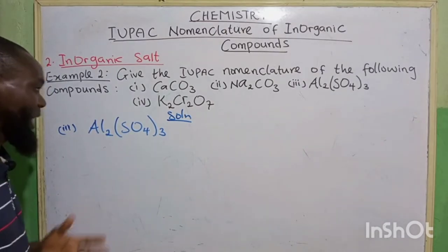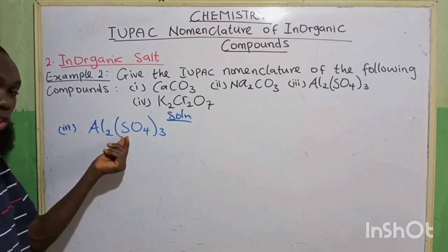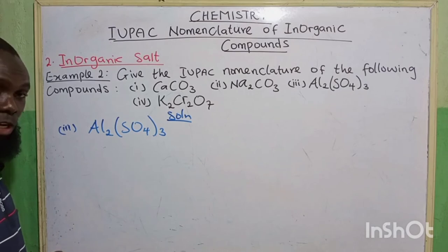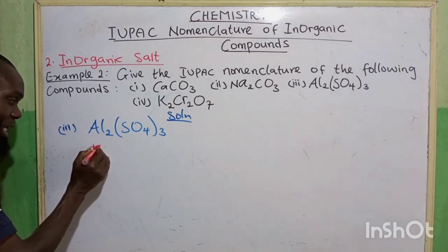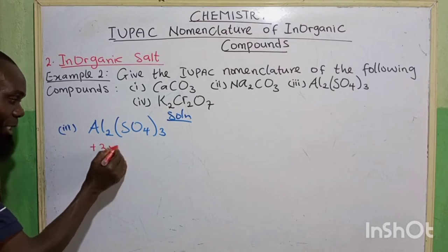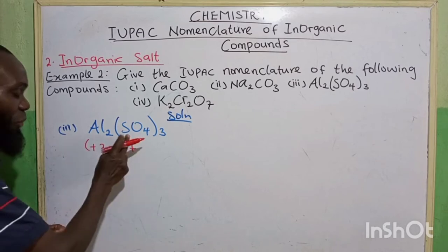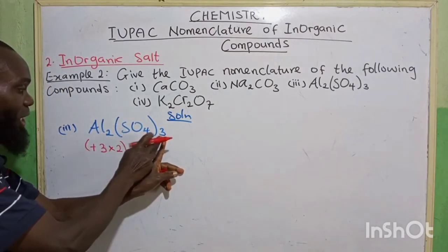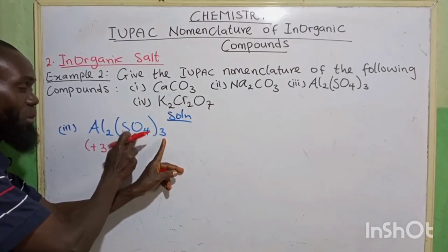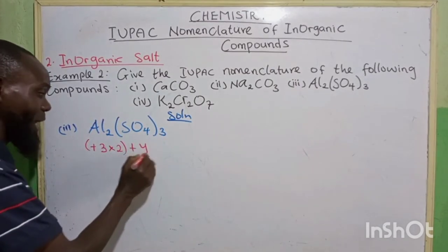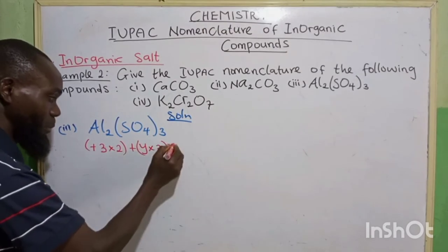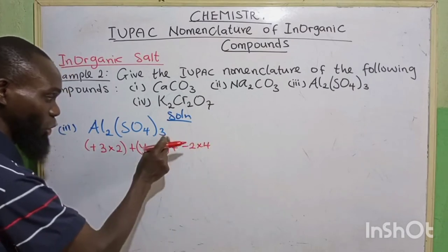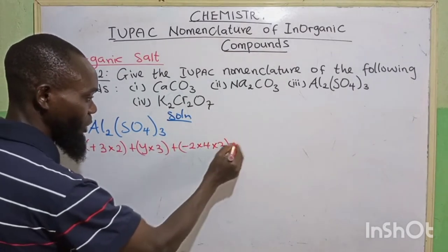The third one still has three elements: aluminum, sulfur, and oxygen. The valency of aluminum is plus 3. It has to be multiplied by 2, plus sulfur (let's say Y) multiplied by 3, plus oxygen minus 2, it has 4, times 4, also multiplied by 3, all equals 0. So 3 times 2 gives 6, plus Y times 3 gives 3Y, plus minus 2 times 4 gives 8, and 8 times 3 gives 24, equals 0.